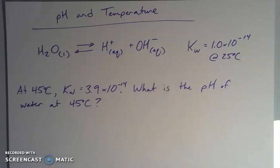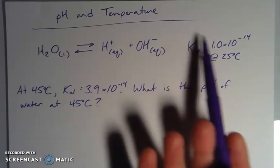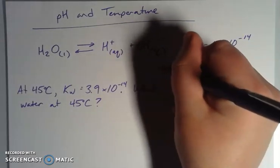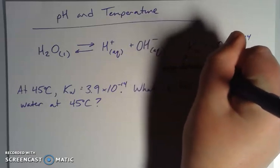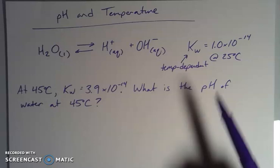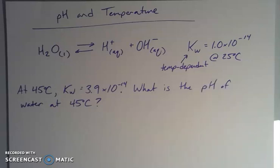So the same Arrhenius that defines acids and bases, the Arrhenius equation says there's this relationship between the temperature and the rate and the activation energy and all these interconnected things. So this equilibrium constant is temperature-dependent. And because we use this equilibrium constant to calculate the pH, then the pH also is temperature-dependent.